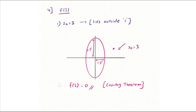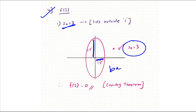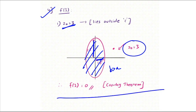For part (4), f(3): ask whether z₀ = 3 is inside or outside the ellipse. The ellipse has a = 1.5 and b = 2.5, so z₀ = 3 lies outside the closed curve. Therefore the value of the integral is 0.